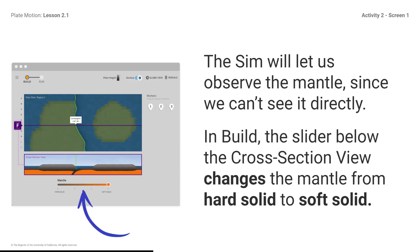The sim will let us observe the mantle, since we can't see it directly. In Build, the slider below the cross-section view changes the mantle from hard solid to soft solid. Students, notice where to change the hardness of the mantle.